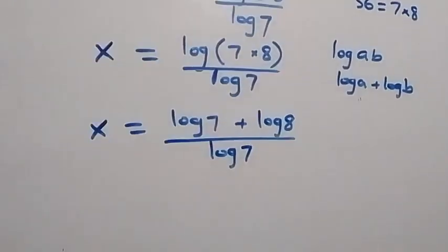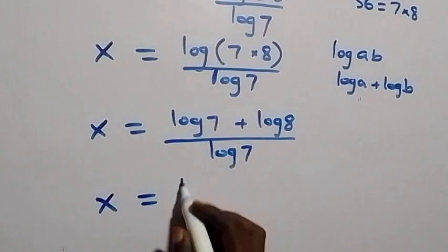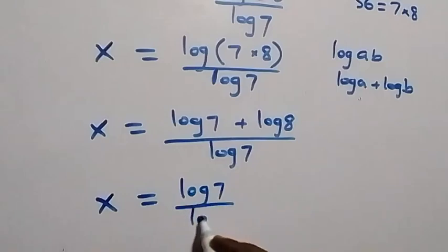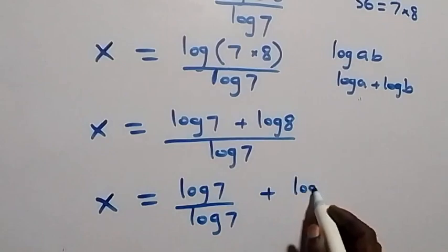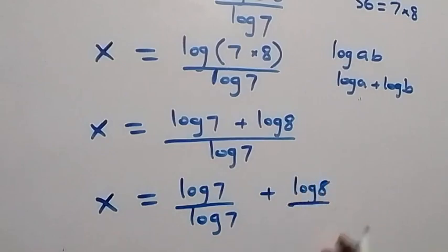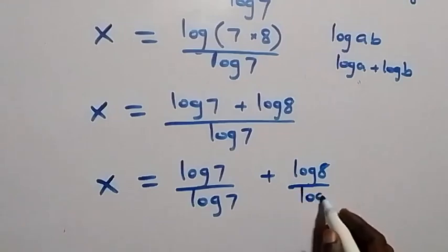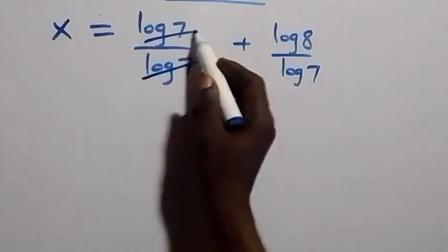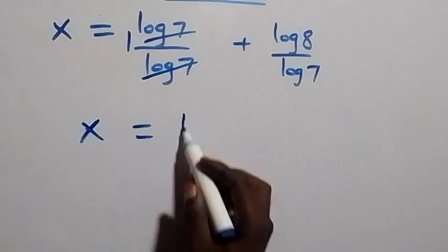We can separate this fraction, so x equals log 7 over log 7 plus log 8 over log 7. The log 7 terms cancel each other, leaving 1, so we have x equals 1 plus log 8 over log 7.